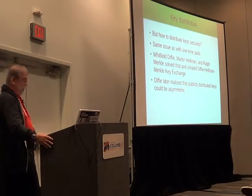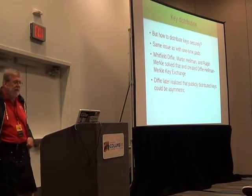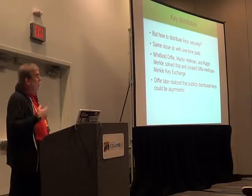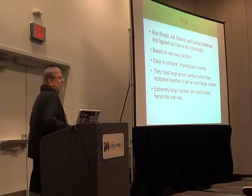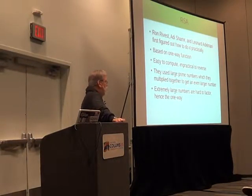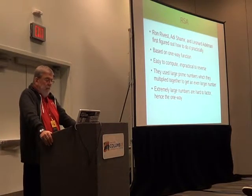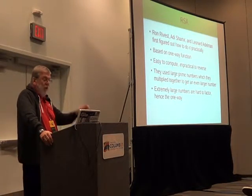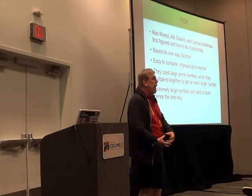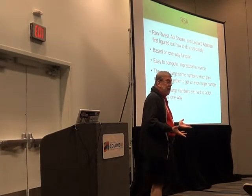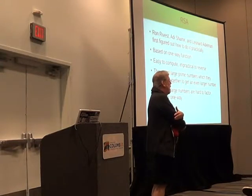Whitfield Diffie realized they could do something that is asymmetric. The people who solved that initially — Ron Rivest, Adi Shamir, and Leonard Adleman — figured out a way to do that. It's based on the idea of a one-way function. When we say one-way, what we're saying is that computing it is simple and easy, but undoing it — going in the other direction — we don't say impossible, we say computationally infeasible.